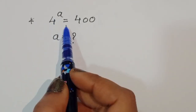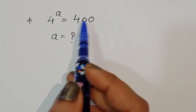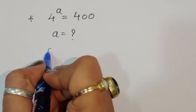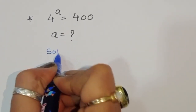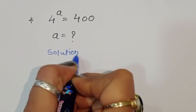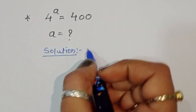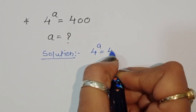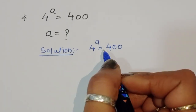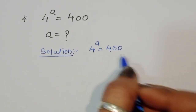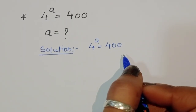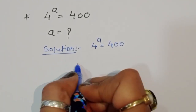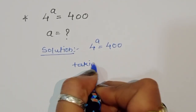We are given 4 power a is equal to 400, and we have to find out the value of a. Let's see the solution. 4 power a is equal to 400 — this is the given question. We can solve this with log, so we are taking log on both sides.